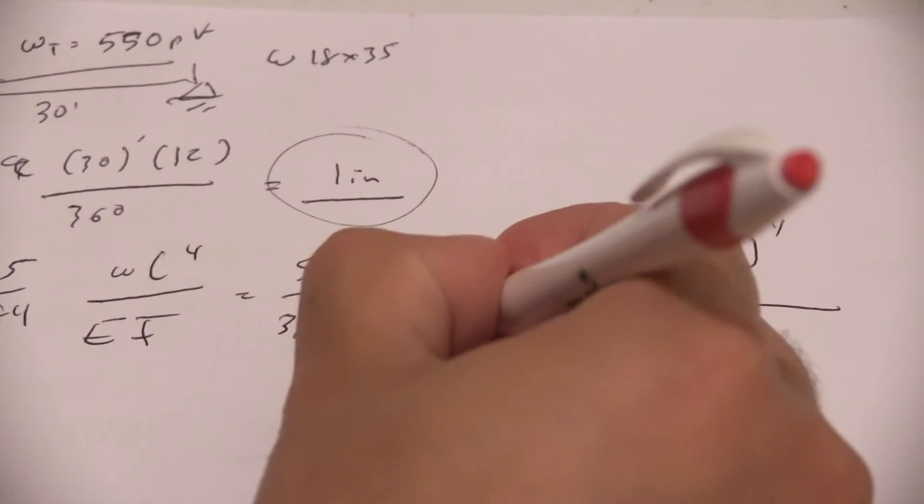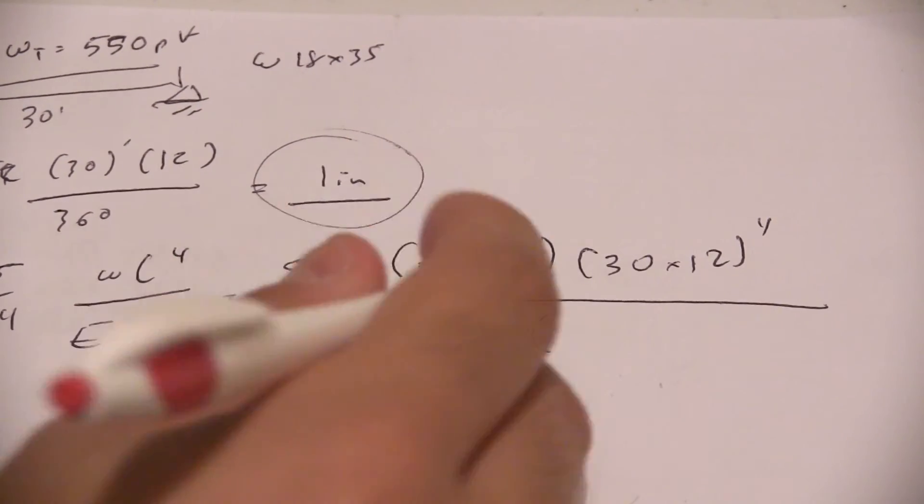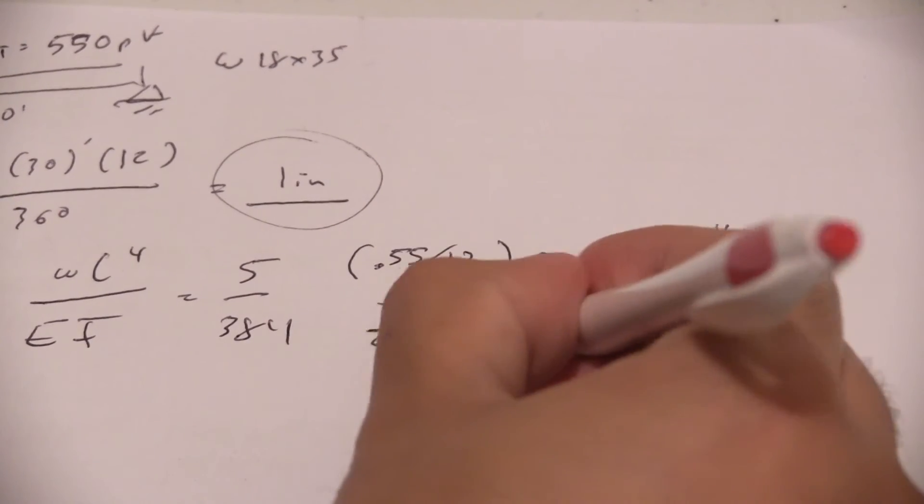Then we're going to divide. E is 29,000 ksi, it's steel, and then our I value, you can get it from the manual, you can calculate it, whatever you want, it's 510.